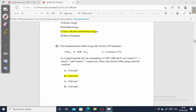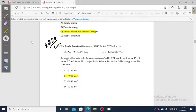In this video we are going to solve question number 13 of TIFR 2020. The question asks about the standard reduction energy for the ATP hydrolysis, which is minus 31 kilojoule per mole at 37 degrees centigrade. In a typical bacterial cell the concentrations of ATP, ADP, and Pi are 8 millimolar, 1 millimolar, and 8 millimolar respectively. What is the reaction Gibbs energy under these conditions?